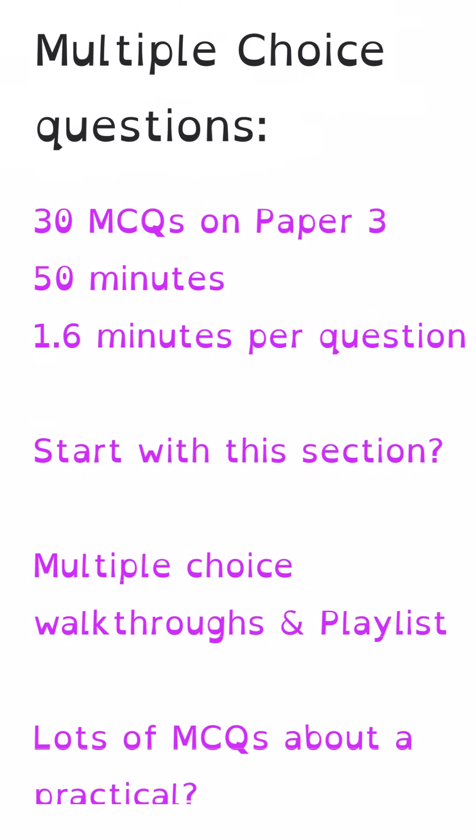The last thing to say about multiple choice questions is this year on the AS paper, they had a big question series about one particular table of data to do with testing for ions. There was a series of different tests done on a series of different unknown compounds, and they actually asked five consecutive questions about those results from that table. So I could see that thing happening again this year for A-level chemistry on paper 3, possibly again to do with testing for ions, or maybe to do with the disappearing cross, or the iodine clock experiment, a series of related questions about something that's presented to you at the start of the multiple choice section.